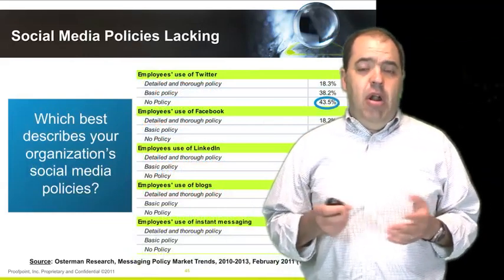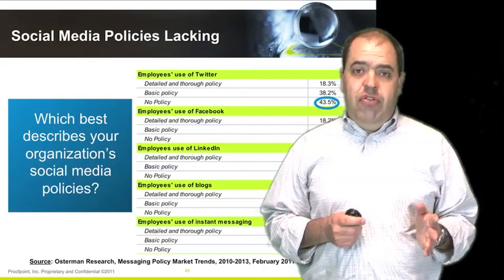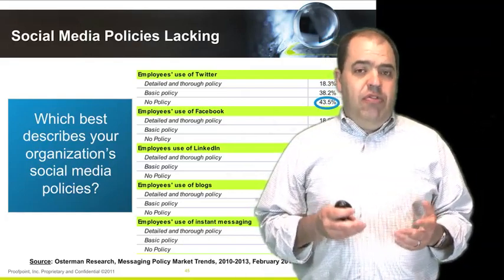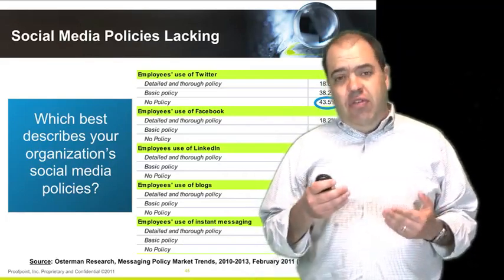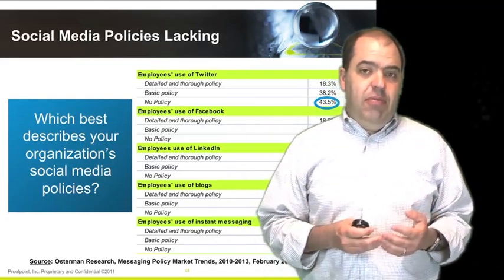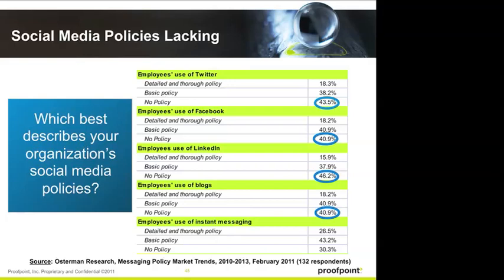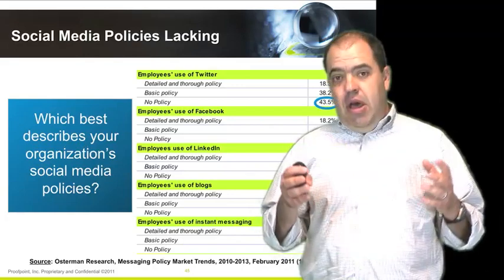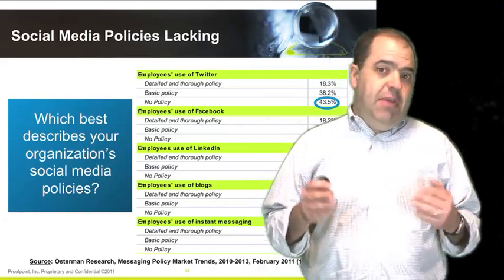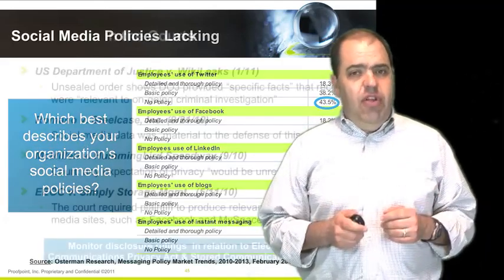The first step to coping with it is putting policy in place. An Osterman Research study done earlier this year found that 40% of organizations have no policy across these different social media categories. Another 40% have just a very basic policy in place, and only 20% have a real strong policy. So think about whether your organization has a comprehensive policy that covers both business use and individuals using social media to communicate for their businesses — and use that as a basis to determine what technology you need to put in place to enforce those policies.